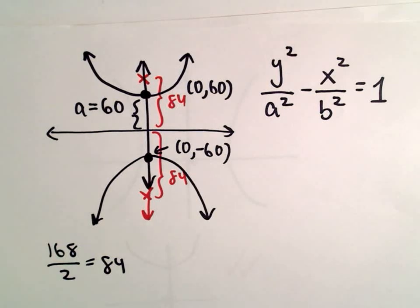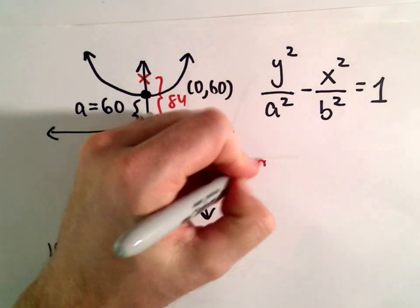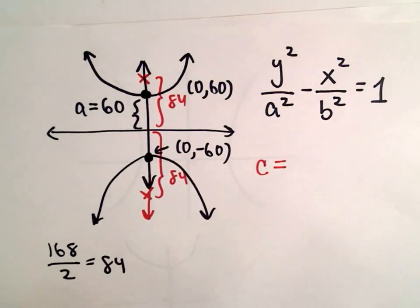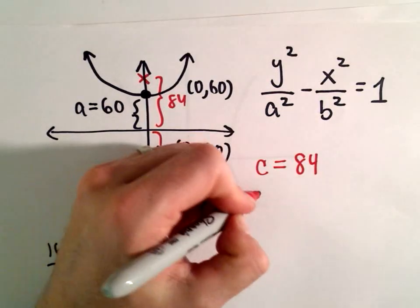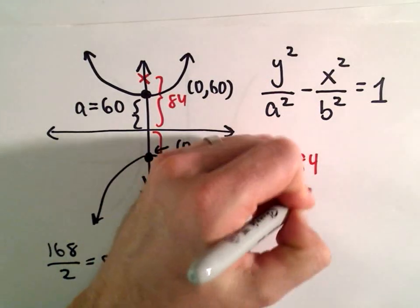Okay, so again though, that distance from wherever it's centered to one of the foci, we label that as C. So our C value here is going to be 84. And again, we set our a values equal to 60.